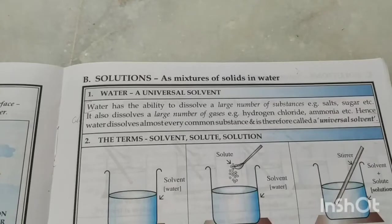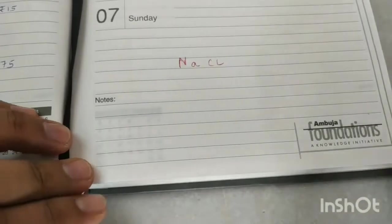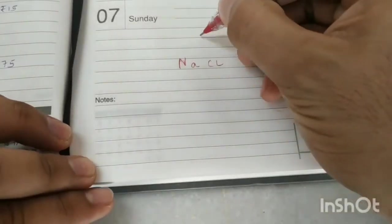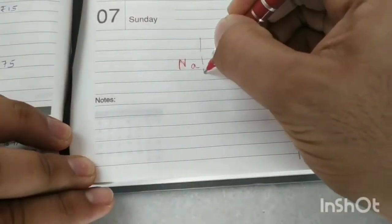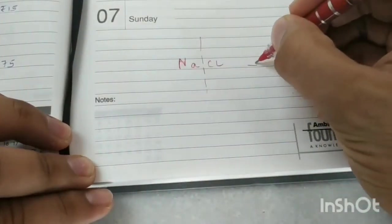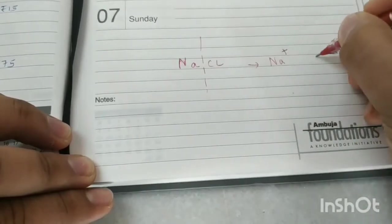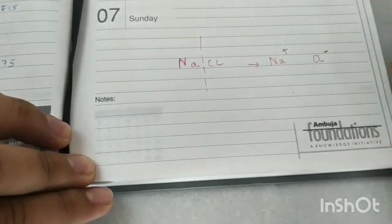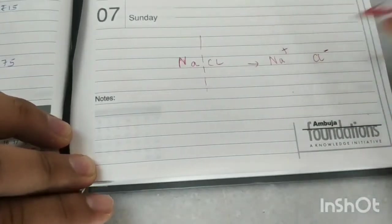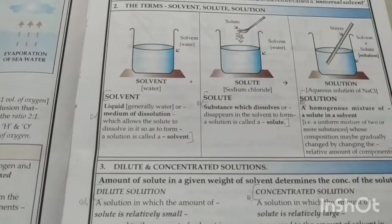For example, when you dissolve sodium chloride in water, water breaks the bond between Na and Cl to give you ions of sodium and chloride in water. That's why sodium chloride dissolves in water.